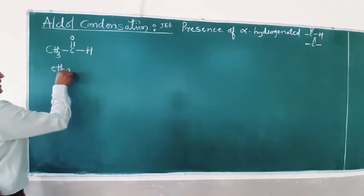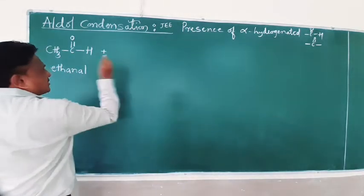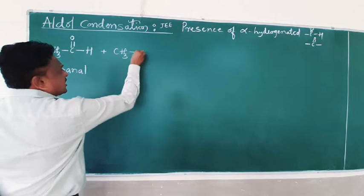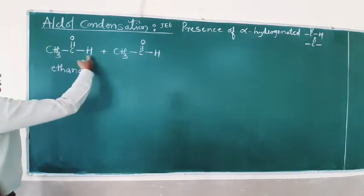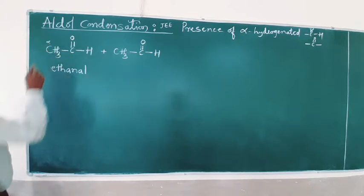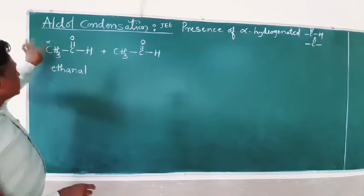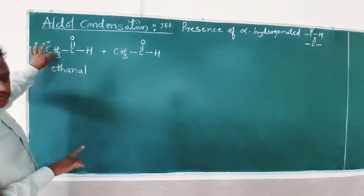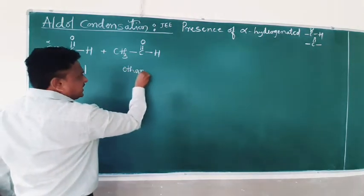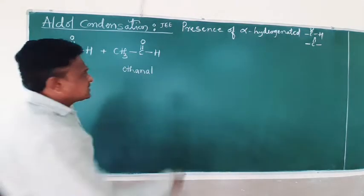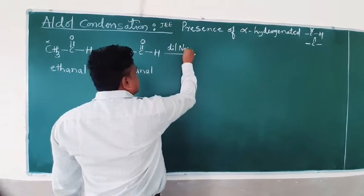Acetaldehyde in the IUPAC system is called ethanal. Just as with Cannizzaro's reaction, the compound here is acetaldehyde. The functional group is attached at the carbonyl carbon; the carbon next to it is the alpha carbon, and it contains alpha-hydrogen. This reaction happens in the presence of dilute alkali, meaning NaOH.